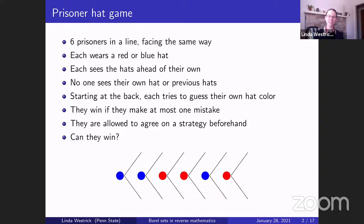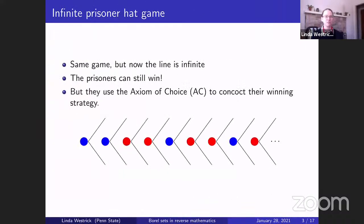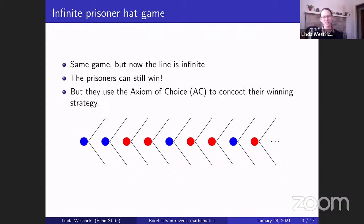There's a generalization called the infinite prisoner hat game — exactly the same game but now the line of prisoners is infinite. Perhaps surprisingly, the prisoners are still able to win this game. It's possible for them to agree on a strategy beforehand such that they will make at most one mistake. They use the axiom of choice to construct this strategy.